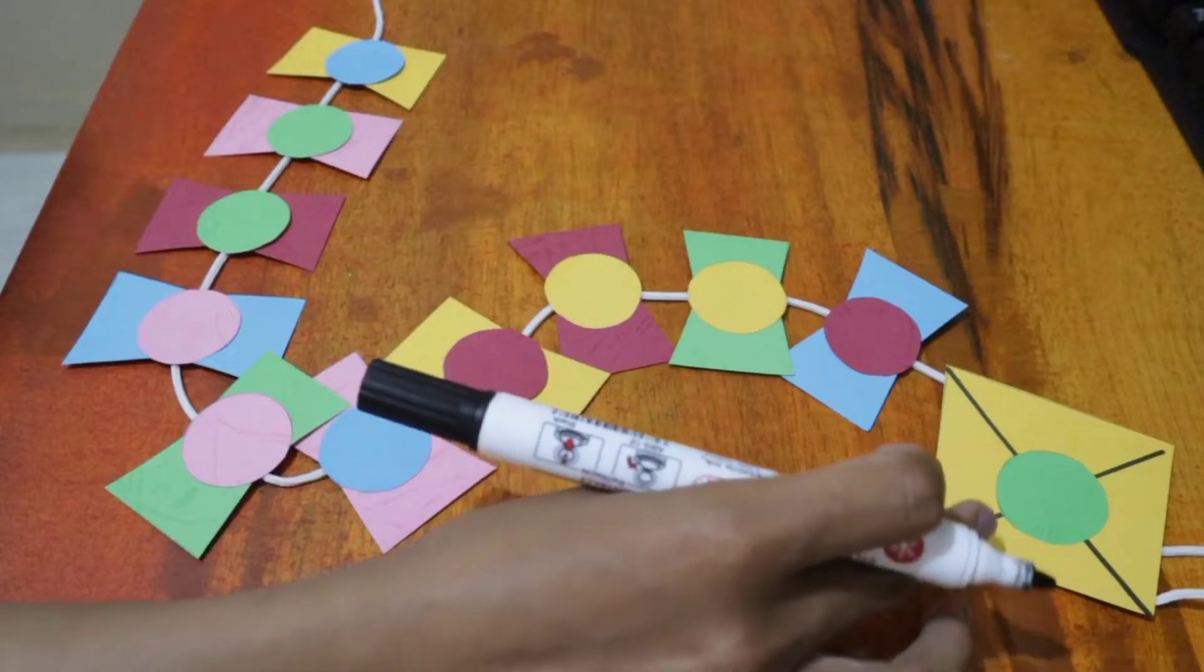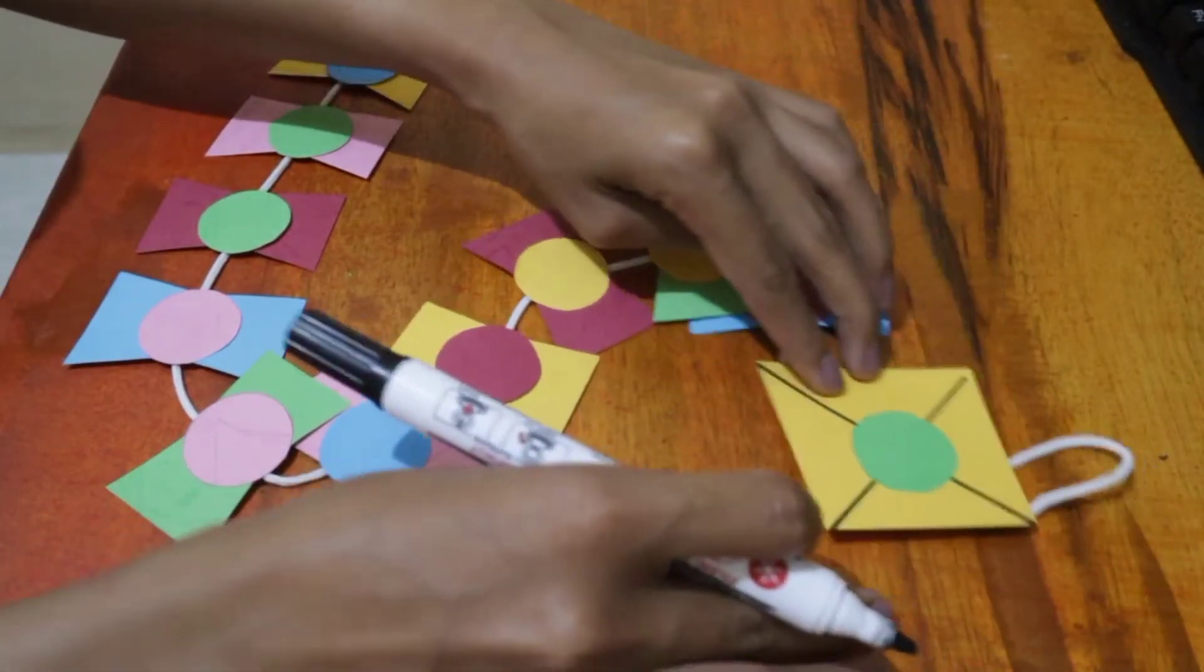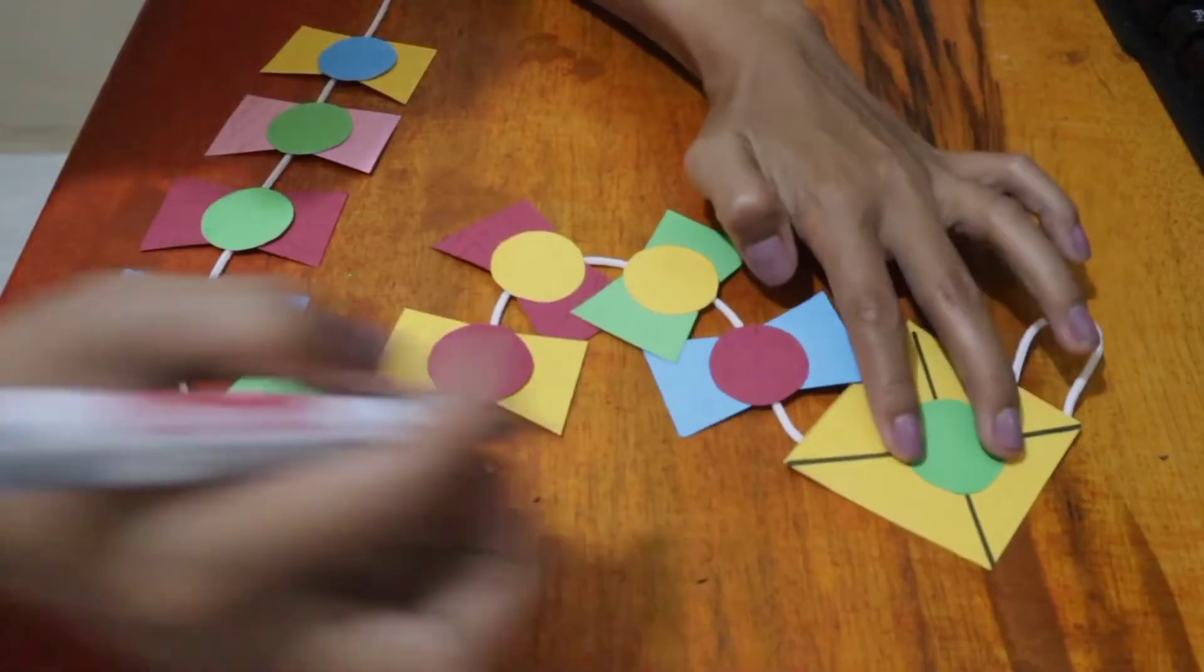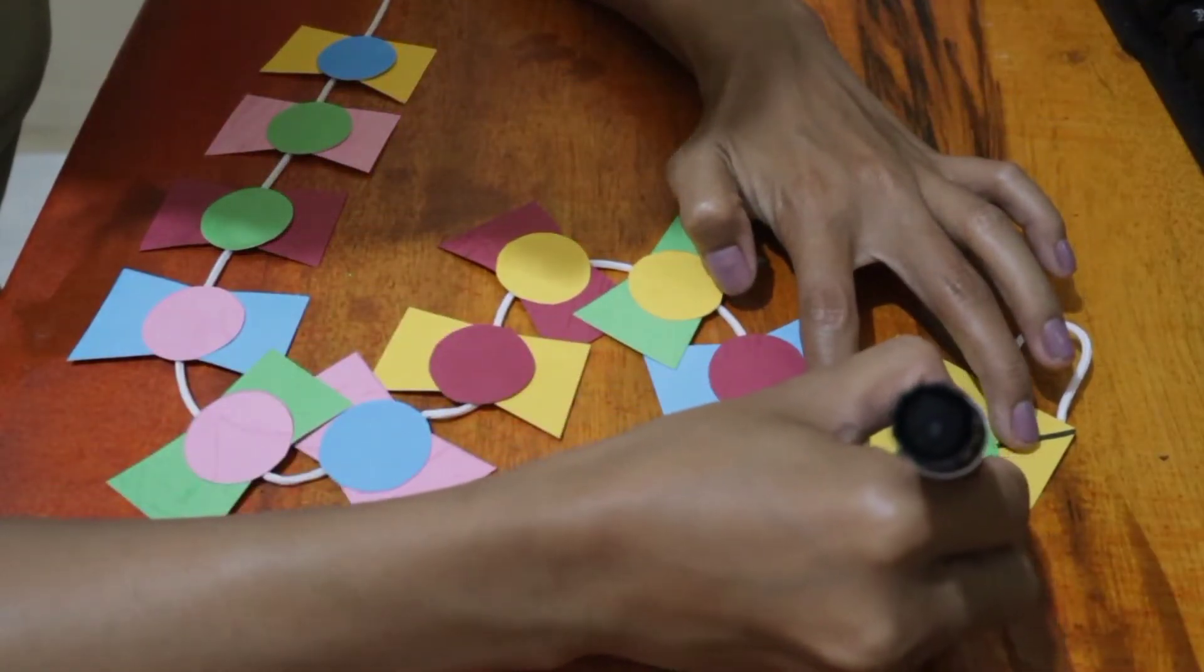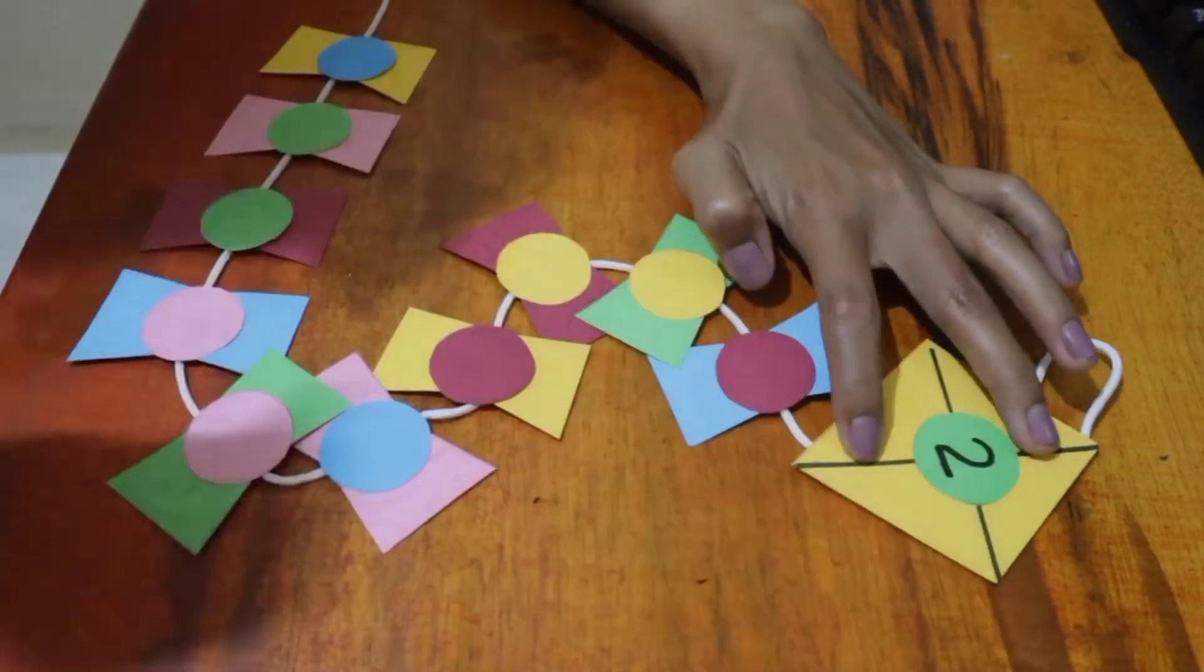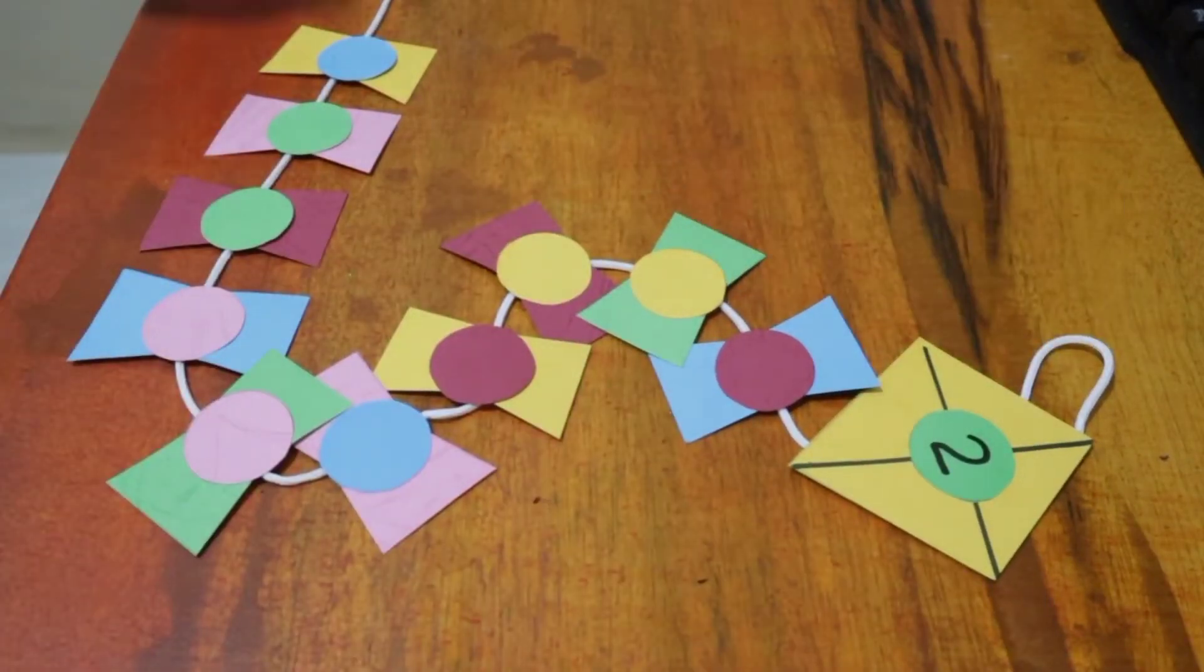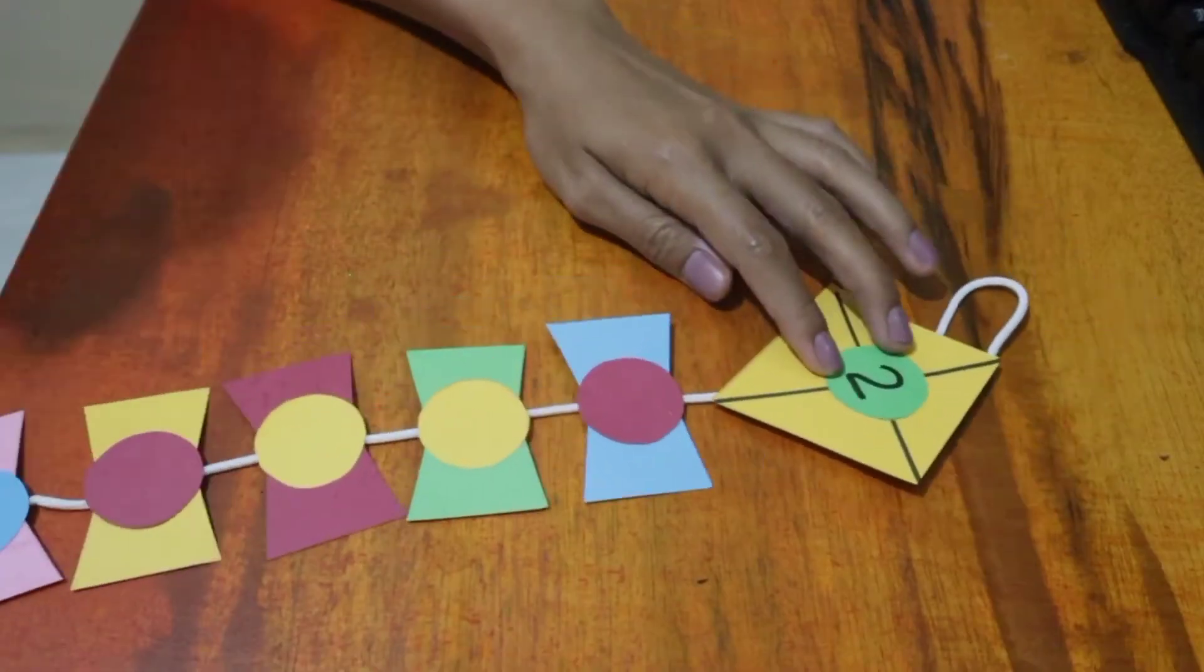The last step is write the number for skip counting. Here I'm going to write skip counting by two, so on this kite I will write two and then I will continue write skip counting by two.